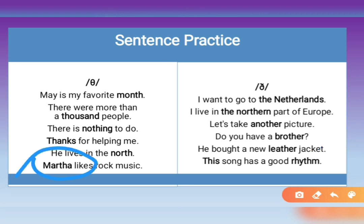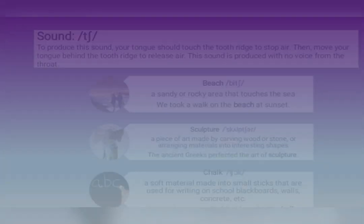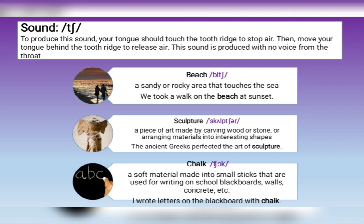The 't' sound is made through the mouth and it is unvoiced, which means you do not need to use the vocal cords to make the sound. For example: 'art' — he's starting art at school. 'Beat' — I love rock and roll because it has a really strong beat and makes me want to dance. 'Hunt' — they are about to go hunting.